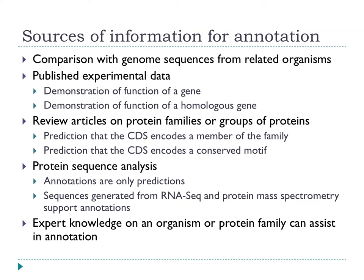What we're supposed to do for a gold-standard annotation is look at all the data and evidence available — experimental data first. If someone has made a mutant in a hemolysin and shown hemolysis goes away, that's direct experimental evidence. That is actually very rare: the number of genes where there is experimental data is now a fraction of a fraction of a percent. Instead what we do is look at homologous genes and assign function based on that — if this gene is homologous to a gene in another strain where experiments have been done, we can port those conclusions across.